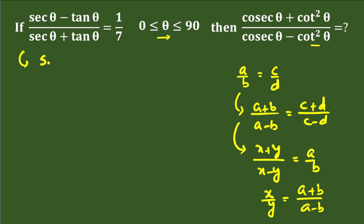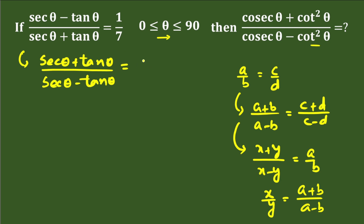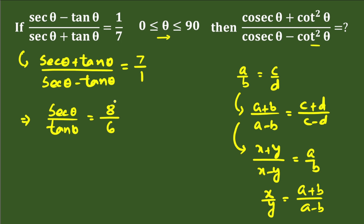Flipping gives us sec θ plus tan θ divided by sec θ minus tan θ equals 7 divided by 1. From here we can calculate the value of sec θ divided by tan θ. So sec θ divided by tan θ equals (7 + 1) divided by (7 - 1), which is 8 divided by 6. Cancelling by 2, that gives us 4 divided by 3.